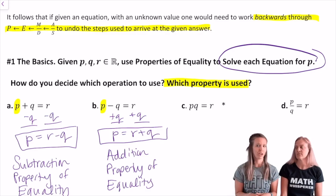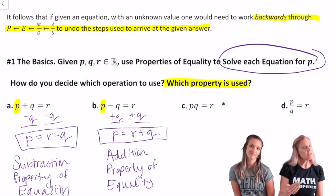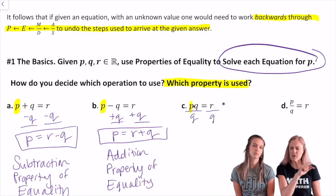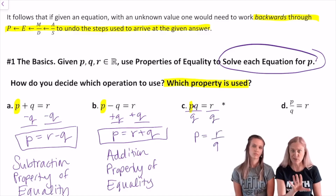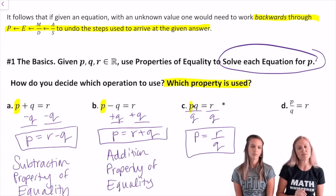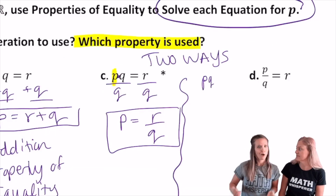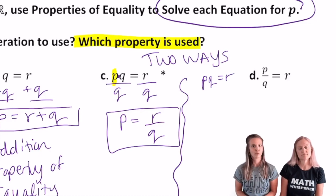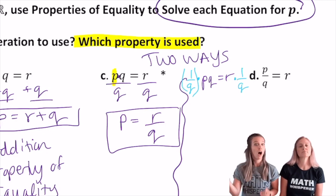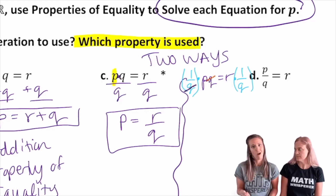That's our major standard in Pre-AP Algebra 2 — you have to show these steps. p times q equals r: we want to undo the multiplication, so we'll use the inverse operation, division. Divide by q — remember to use the fraction bar, we're not going to use the divide sign in Algebra 2. Write it on both sides: division property of equality. We get p equals r divided by q. Since p, q, and r are all real numbers, I could also use the inverse property of multiplication — multiply by 1 over q on both sides.